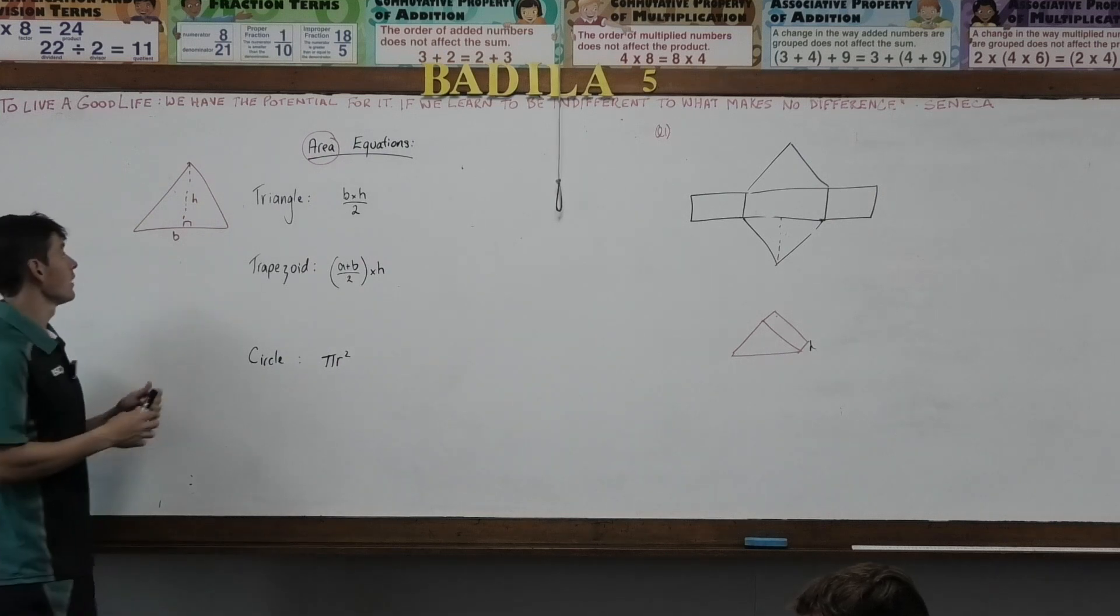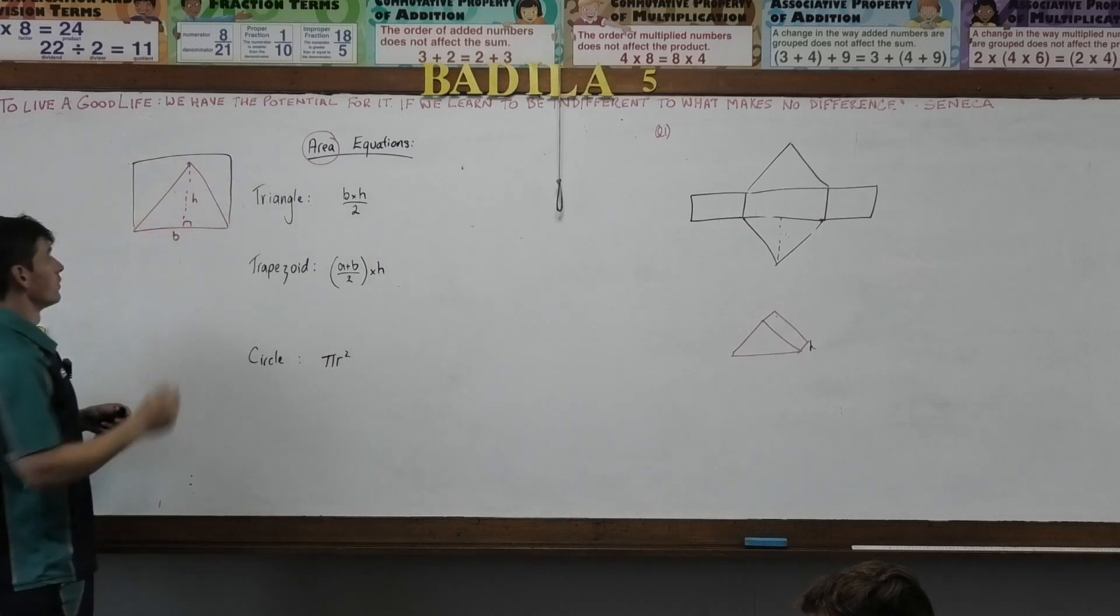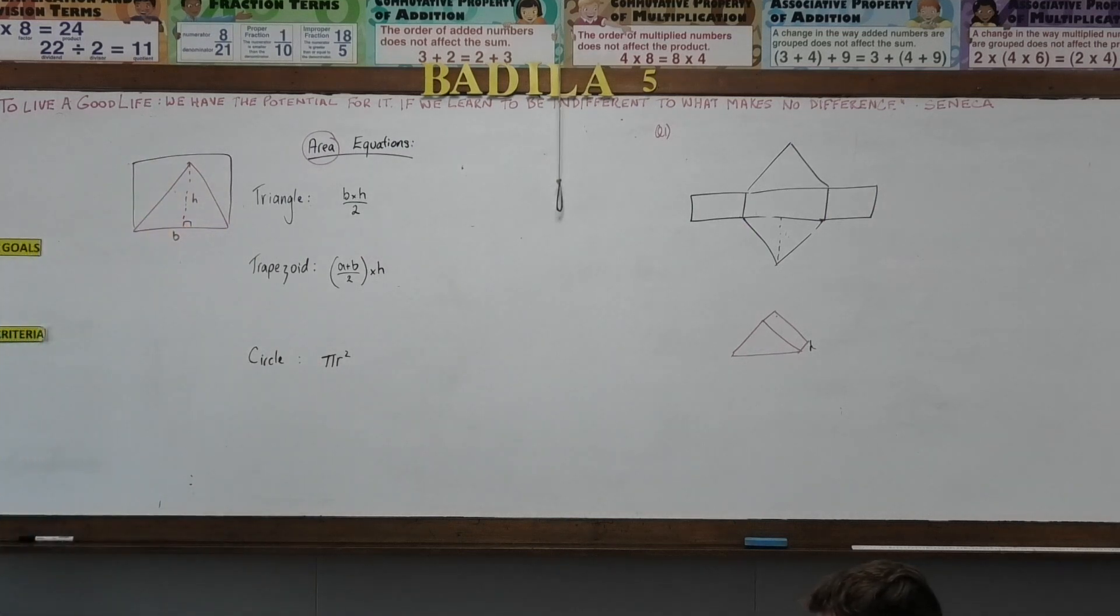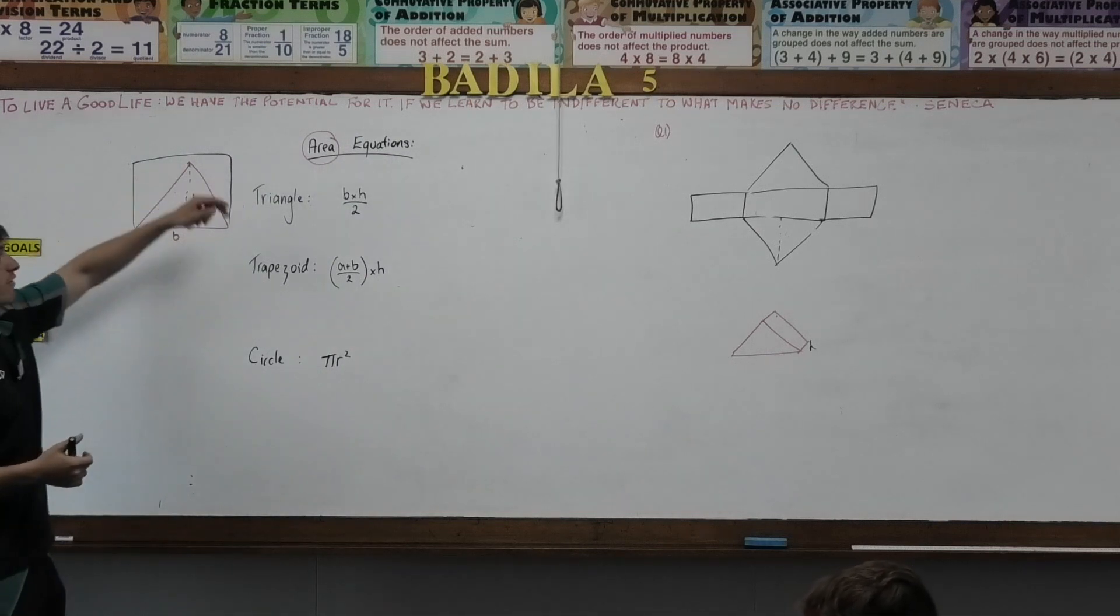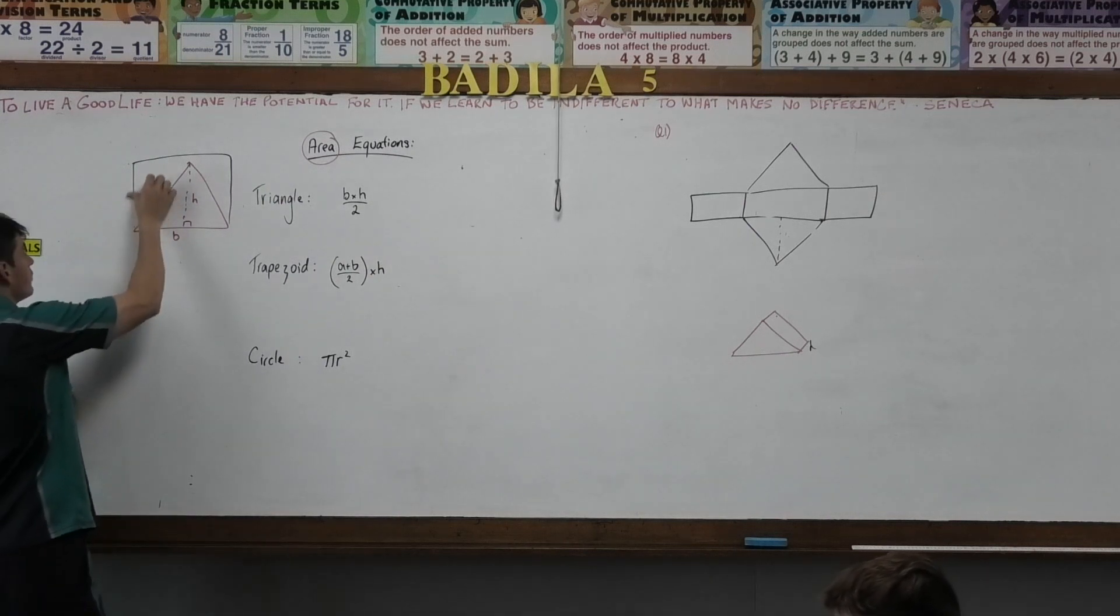If we think about what a square looks like, that kind of makes sense too, because a rectangle, base times height would be our rectangular shape. How much of that do we have in the red? Half of it divided by 2, that's where the triangle formula comes from.